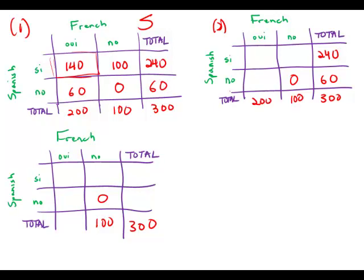we start summing across rows, summing across columns. We're able to deduce that there are 140 who study both Spanish and French. So statement number two by itself is sufficient.